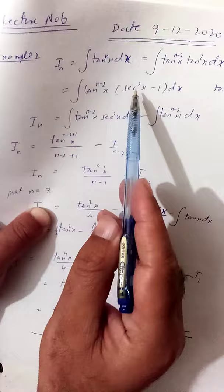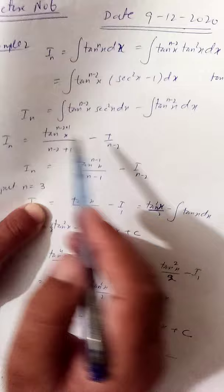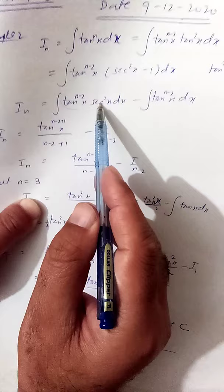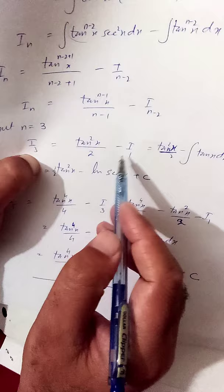Now this function contains a product with its derivative, so using the power rule we get tan^(n-2+1) over (n-2+1), which gives tan^(n-1)x over (n-1), minus I_(n-2). Then tan^(n-1)x over (n-1) minus I_(n-2).